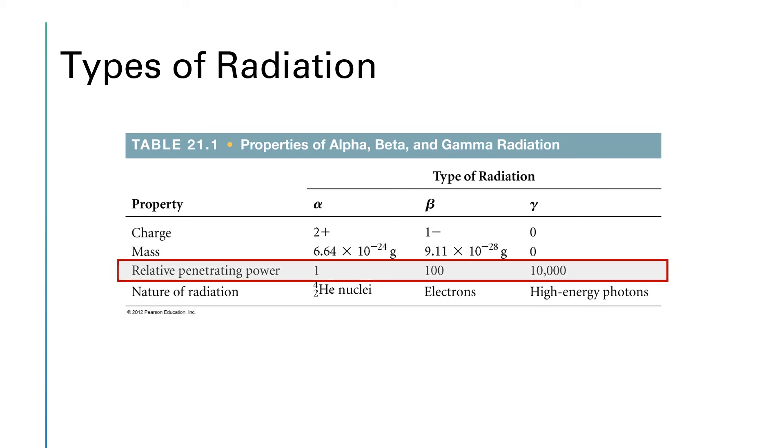The gamma radiation will penetrate 10,000 times as deeply as alpha radiation. And so depending on what type of radiation you're dealing with, you have to take different measures to protect yourself from the radiation.